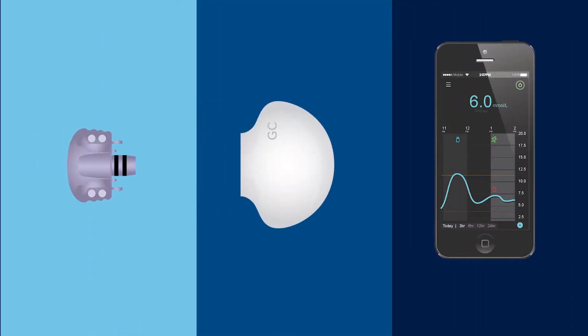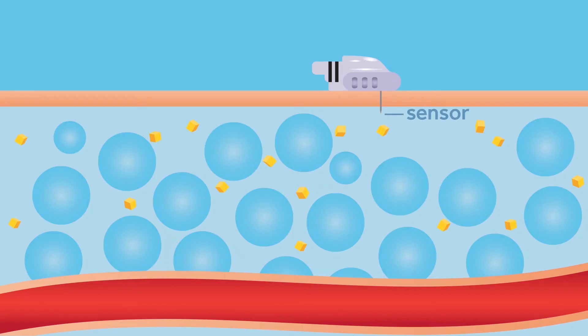The CGM system is made up of three parts: the sensor, a transmitter, and a monitor. The sensor is inserted under the skin so it is in contact with the fluid between your cells, called interstitial fluid.